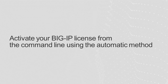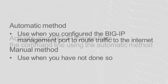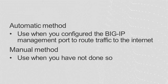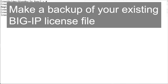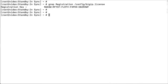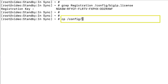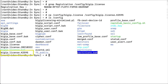Next, activate your BigIP license from the command line using the automatic method. Use the automatic method if you have configured the BigIP management port to route traffic to the internet; use the manual method if you have not done so. First, to make a backup of your existing BigIP license file, enter: cp config bigip.license config bigip.license.articleid. You can see the system made a backup file.